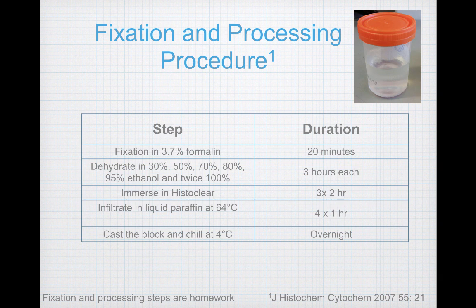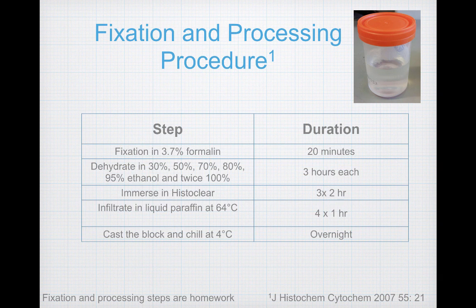After all the dehydration steps are completed, immerse the tissue in histoclear. The duration of this step is 3 changes of histoclear solution, each for a minimum of 2 hours. Afterwards, the tissue will be infiltrated with liquid paraffin by immersing the tissue in paraffin and holding it at 64 degrees Celsius in an oven, which melts the paraffin. The duration of this step is 4 changes of 1 hour each. Then cast the block as shown in the video tutorial, and chill at 4 degrees Celsius at least overnight until you're ready for sectioning.